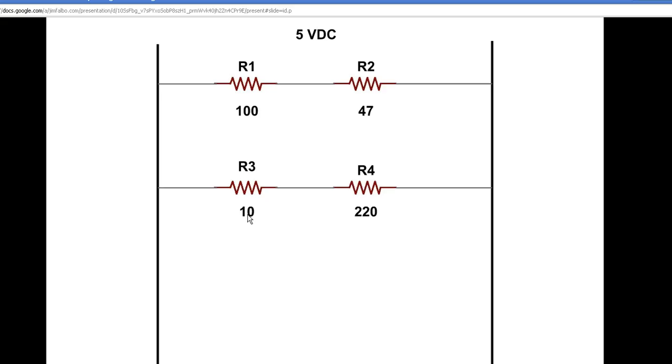Double check them with an ohmmeter to make sure you have the right values. The goal is to hook R1 and R2 in series, and that is going to be placed in parallel with R3 and R4, which are in series.